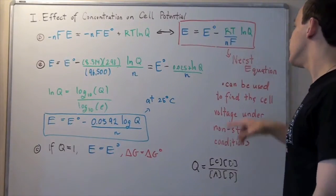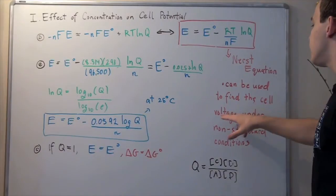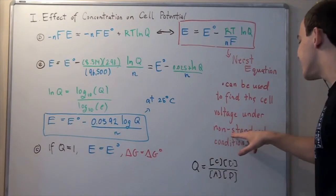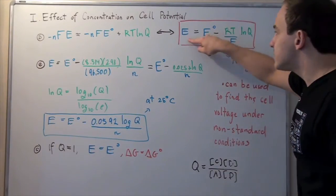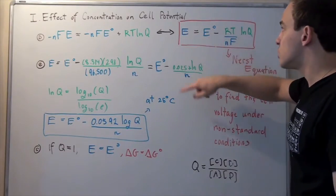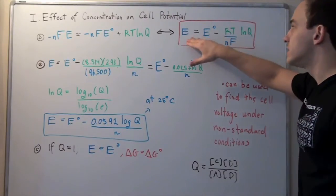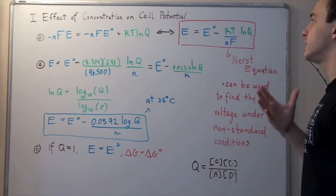This equation is called the Nernst equation, and it can be used to find the cell voltage under non-standard state conditions, where this is our cell voltage under non-standard state conditions. So we basically plug this in and all these values in, and we get our cell voltage for non-standard state conditions.